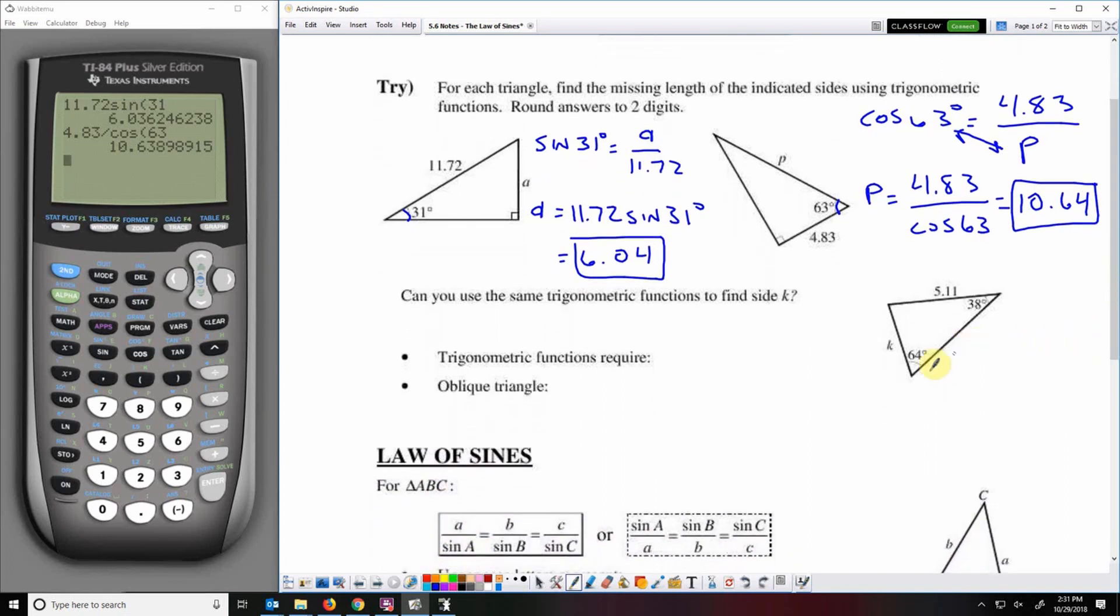Can we use the same types of trig functions to find the length of K here? So first I need to know what is this angle measure right here. So triangles 180 degrees take away 38 and 64 and we get 78 degrees which means this is not a right triangle. The answer is no because trigonometric functions require right triangles and that is not a right triangle. That is an oblique triangle which is any triangle with no right angles.